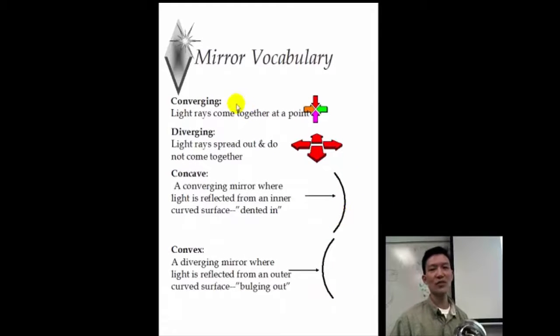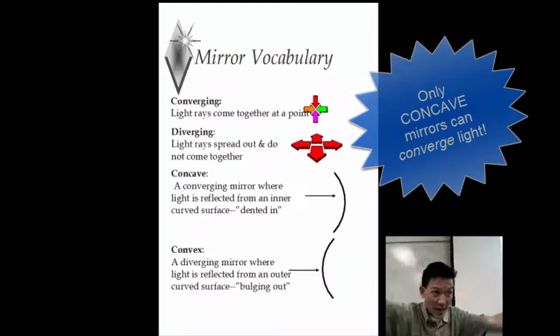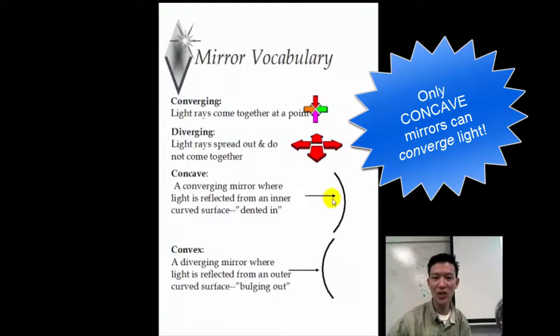In terms of defining basic terminology for mirrors, converging is just a fancy word for pulling the light together to a point. And there's only one kind of mirror that will pull light together, and that's concave, because it's dented inwards. Think of it like a cave, like you're going into a cave.